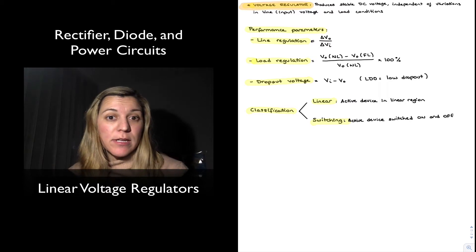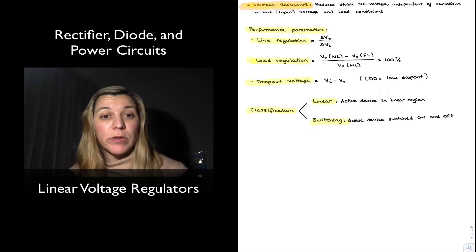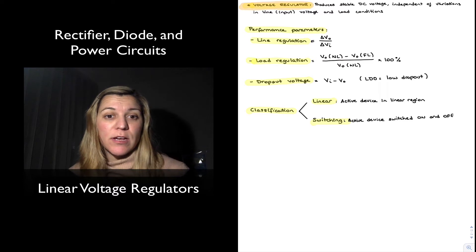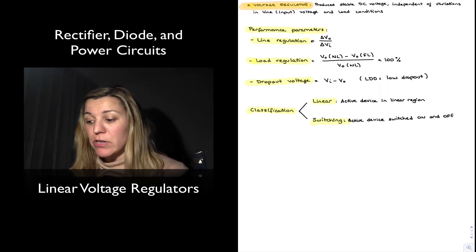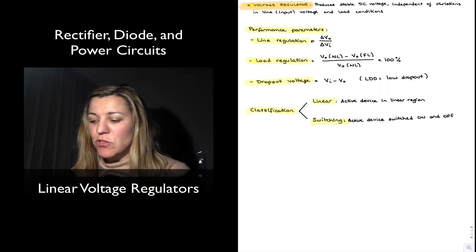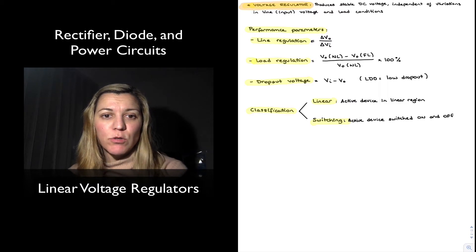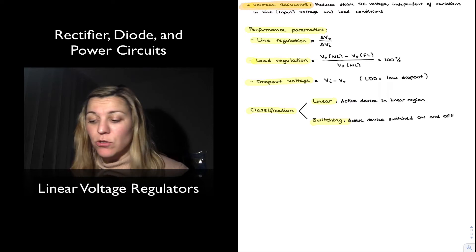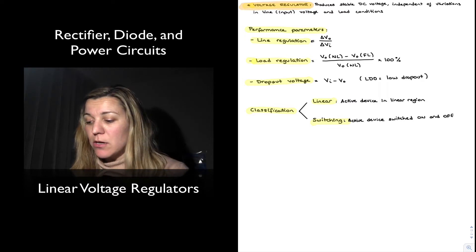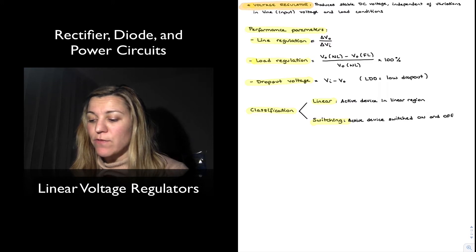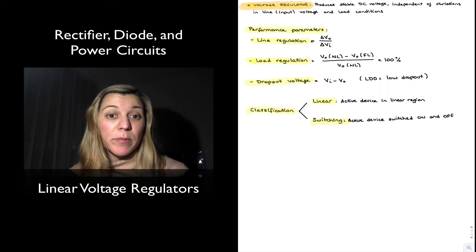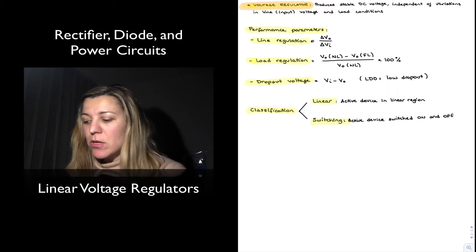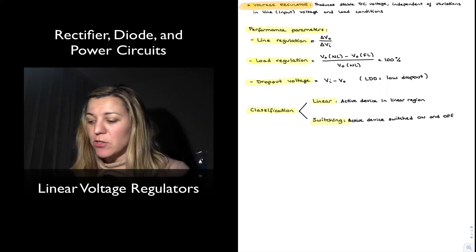Typical performance parameters for a voltage regulator will be line regulation, which measures the variation in output voltage with respect to the variation in the unregulated input voltage, so delta V out versus delta V in. The load regulation measures variation of output voltage based on changes in loading conditions. It's typically calculated as the difference of the V out for no load minus V out for full load divided by the nominal value of V out, which is V out with no load, typically expressed as a percentage, so times one hundred percent.